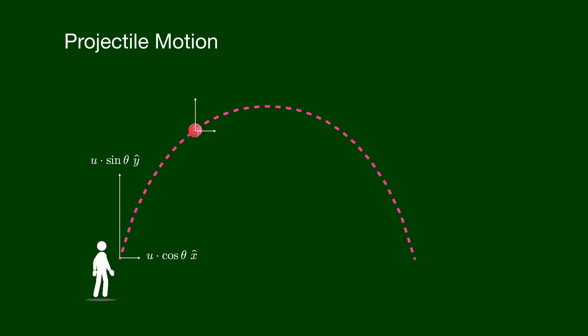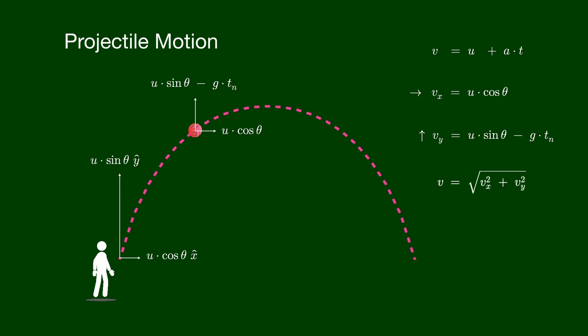Let's calculate the velocity and displacement of the ball at time t_n. We can use this equation to find the velocity at time t_n. The acceleration along the x-axis is zero, therefore the velocity component along the x-axis does not change with time. Applying the equation in the y direction gives the y-component of velocity. These are the two velocity components in the x and y directions at time t_n, and the actual velocity is their superposition.